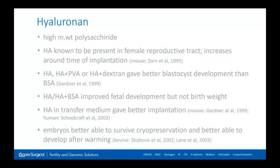Hyaluronan is a high molecular weight polysaccharide added to culture media. We know it's present in the female reproductive tract and gives better blastocyst development. We also think it gives better implantation rates. There's also a little data suggesting it improves membrane stability, meaning embryos are better able to survive freezing, thawing, and develop better after the thaw.